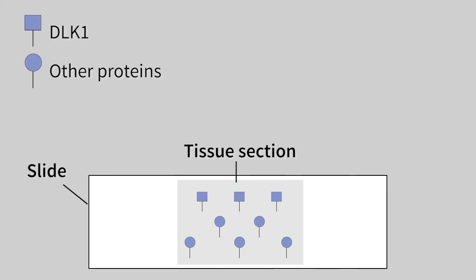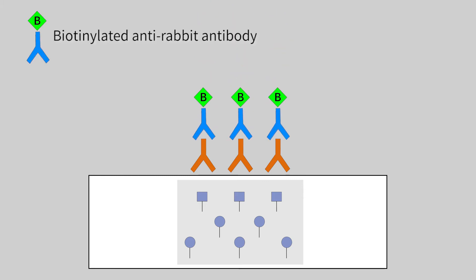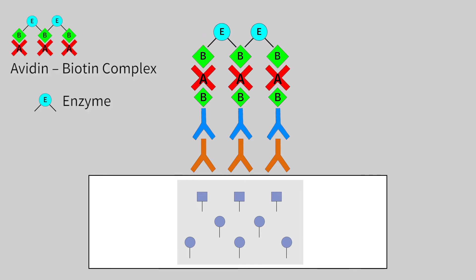I use the indirect method, where the primary antibody is an IgG molecule made in rabbits that recognizes DLK1 protein as its antigen. We then use an anti-rabbit secondary antibody. The secondary antibody is biotinylated and the signal is amplified by adding avidin-biotin complex.